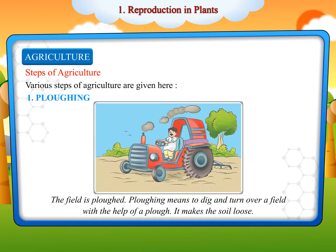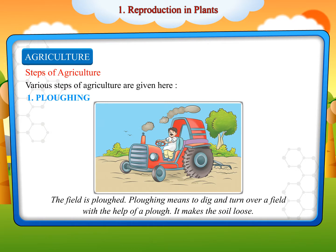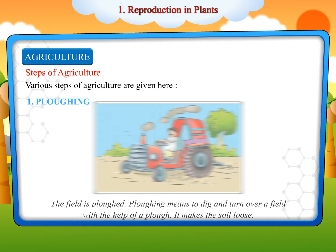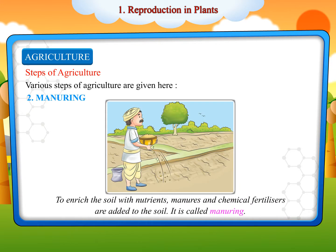Steps of Agriculture. Plowing: The field is plowed. Plowing means to dig and turn over a field with the help of a plow. It makes the soil loose. Manuring: To enrich the soil with nutrients, manures and chemical fertilizers are added to the soil. This is called manuring.